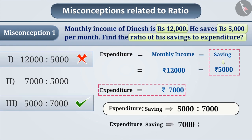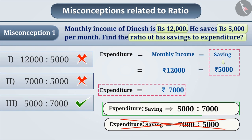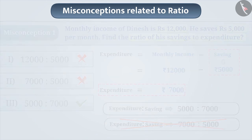Some students think that the ratio can be represented in any order. Therefore, they represent the ratio of savings to expenditure as Rs. 7,000 is to Rs. 5,000. But this is incorrect. Hence, option 2 is an incorrect answer. The ratio should be represented in the same order as asked in the question.